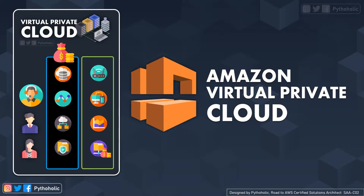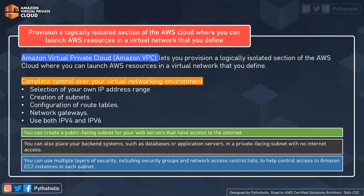Now let's see what Amazon has to offer with its cloud hosting platform in the form of a virtual private cloud. With the help of VPCs, you can provision a logically isolated section of the AWS cloud where you can launch AWS resources in a virtual network that you define. Amazon VPC is an on-demand pool of shared computing resources that can be customized as per our requirement and allocated within the AWS cloud environment.